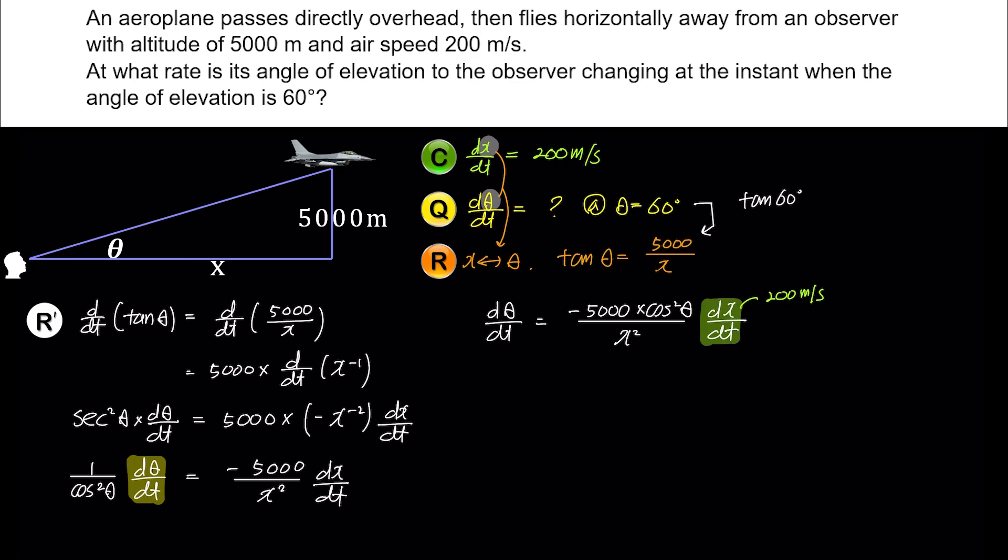First, tan(60°) = √3 and this value becomes 5000/x. Solving for x, we get x = 5000/√3 and we'll use this later. Next, we know that cos(60°) is 1/2. So we are now ready to find the value of dθ/dt. Using the values we found, dθ/dt becomes -5000 times (1/2)² over (5000/√3)² times 200.